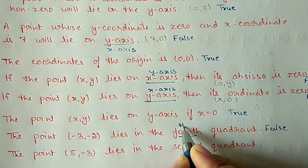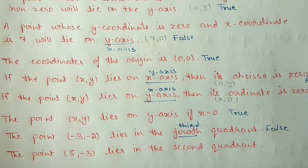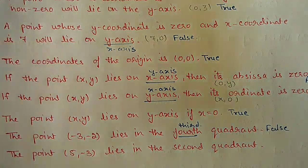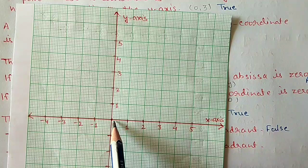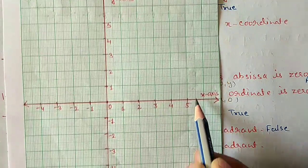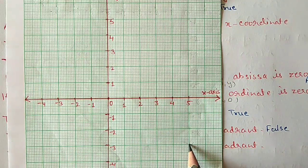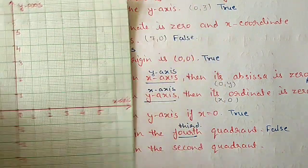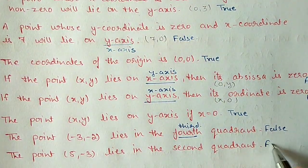The correct answer for part g is: (-3, -2) lies in the third quadrant. Part h: the point (5, -3) lies in the second quadrant. We plot 5 on the x-axis and -3 on the y-axis — the point falls in the fourth quadrant. So this statement is also false; it lies in the fourth quadrant.